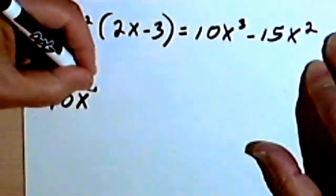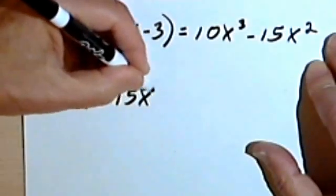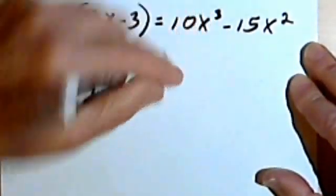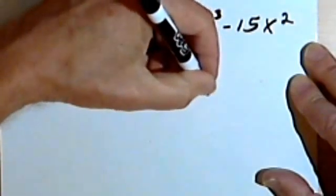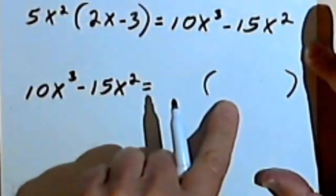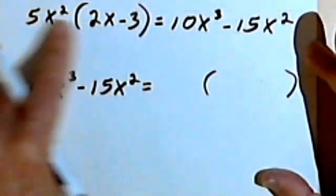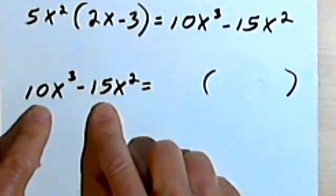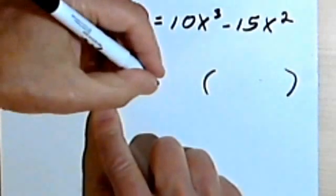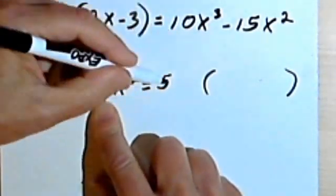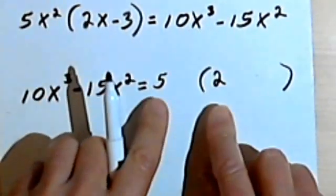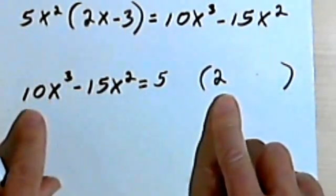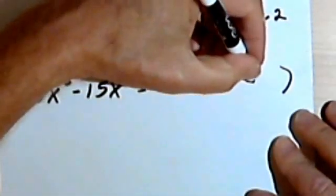Let's start with 10x to the third minus 15x squared. What I'm looking for, when I'm looking for the factors, is some monomial over here and a polynomial that I can fit in these parentheses. I'm working backwards trying to get to here as if I don't know what this is. So I've got a 10 and a negative 15, and I know that I can divide them both by 5. I'm going to put a 5 over here, and 5 into 10 goes 2 times, so that tells me 5 times 2 is going to give me the 10.